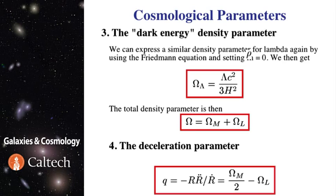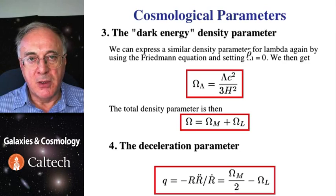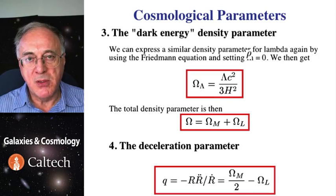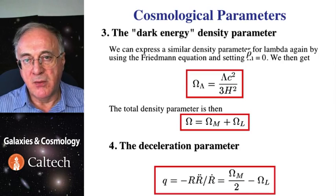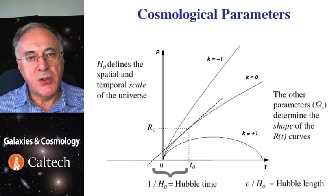We also define the deceleration parameter, often designated with lower case q or q naught at the present, which in the absence of cosmological constant reduces to one half of the density parameter. But if the cosmological constant is present, its value is different.